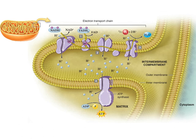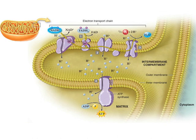The electron transport chain is a series of four proteins embedded in the inner mitochondrial membrane. Let's start our tour of the electron transport chain with the first membrane protein. NADH donates the two electrons it received during glycolysis or the Krebs cycle to the first enzyme of the electron transport chain. These two electrons will then travel through the second, third, and fourth proteins.